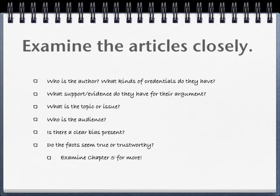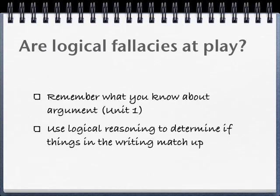Part 2: Critical Reading. Examine your articles closely. Who is the author? What kind of credentials do they have? Why should we listen to this person? What support or evidence do they seem to have for their argument? What is the topic or the issue? Who is the audience? Is there a clear bias present? Do the facts seem true or trustworthy? Examine Chapter 5 in your textbook for more. Remember what we've talked about involving logical fallacies — use logical reasoning to determine if the things in the writing really seem to match up or are well-reasoned.